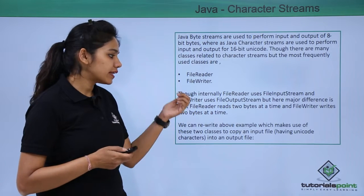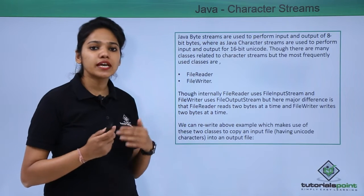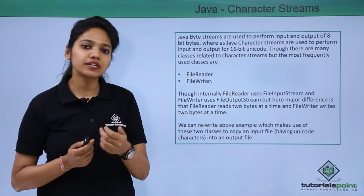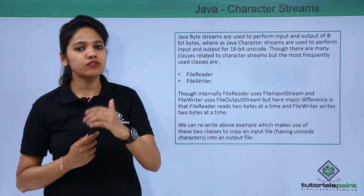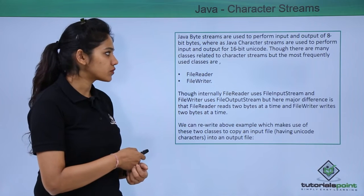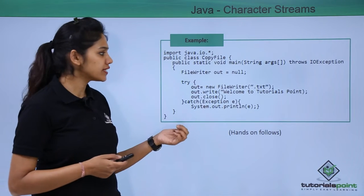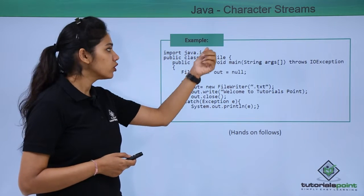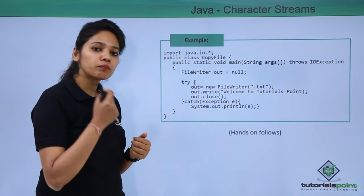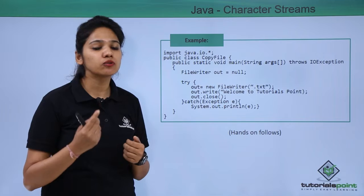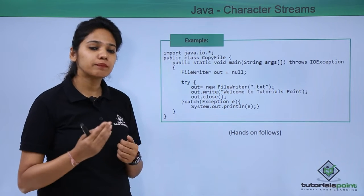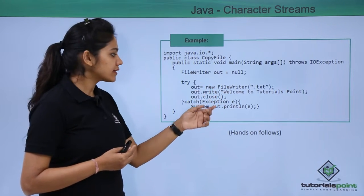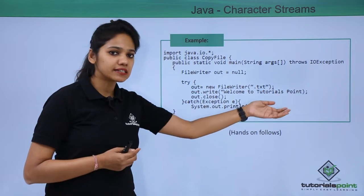Let us understand these with the help of an example — how you can write data and how you can read data, and how it is different from byte input and output streams. In the first example, we are using the package java.io.* because it includes all the classes available to perform these operations.